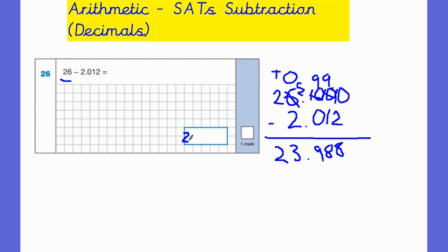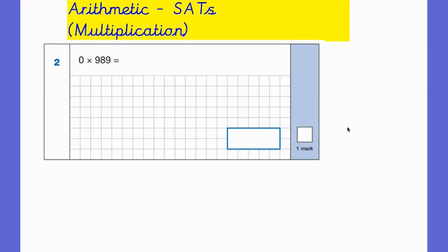And once again, reminding the children to write their answer in the box and remembering to put in that decimal point. Things like forgetting decimal points and not writing your answer in the box, it's a real shame when children get those answers wrong because they're just careless mistakes and they've done all the maths correct. So to miss things out like that, I just try to get the children out of those kind of bad habits, because it's a real shame when they've done the maths but they still don't get the answer correct.